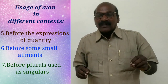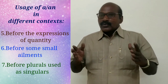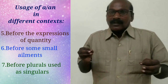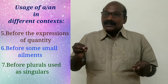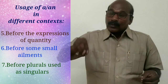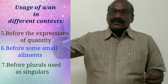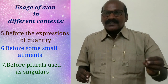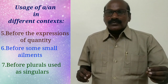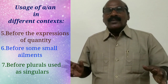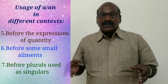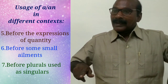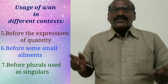We use the indefinite article before words that are plural in form but used as singular. For example: a means, a series, a gallows, a barracks, an innings. These words seem to be plural but are practically used as singular.